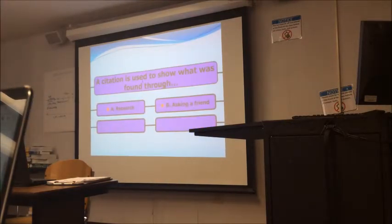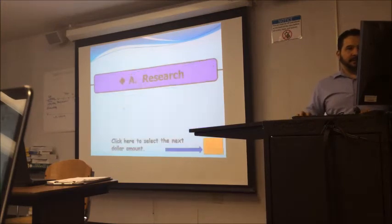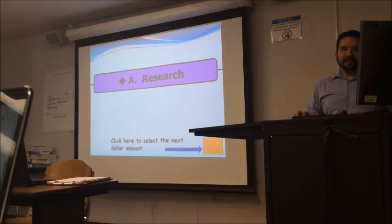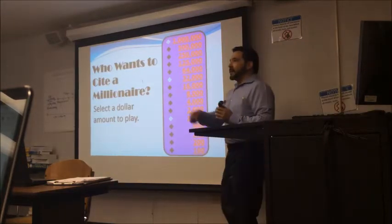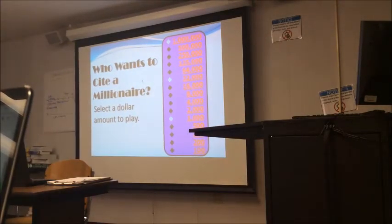A team, B team. They start with one thousand. Which one is it? You've got to answer the question here. A citation is used to show what was found throughout what? Research, observation, making things up, asking a friend. When do we use it? A citation. Research. Research? Yeah. Good job.